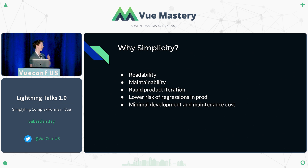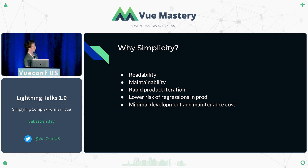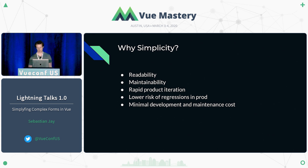So why simplicity? Simplicity is desirable for a number of reasons, including readability, maintainability, rapid product iteration, low risk of regressions in prod, and minimal development and maintenance cost of code. Having less code, having simpler code, tends to help with all those things, as long as it's readable.